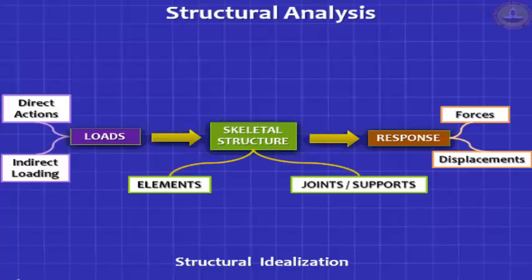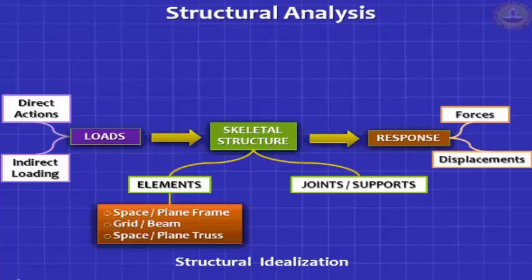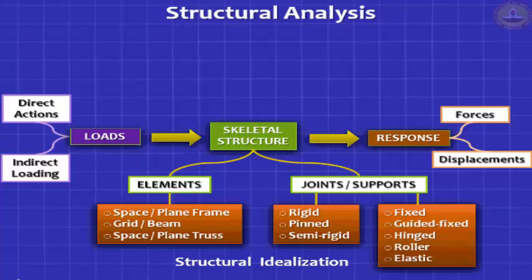The structure itself is modeled with two parts: the structural elements, and the joints that connect the elements and the boundaries called supports. The elements typically are space or plane frame elements, grid or beam elements, and space or plane truss elements. The joints are typically modeled as rigid joints, pinned joints, and occasionally as semi-rigid joints.